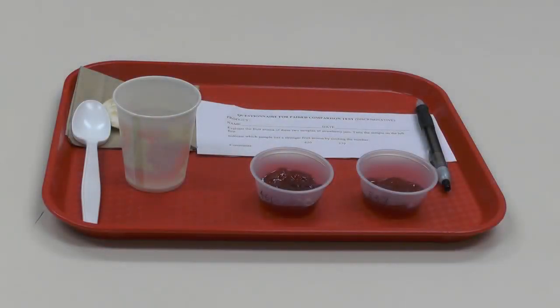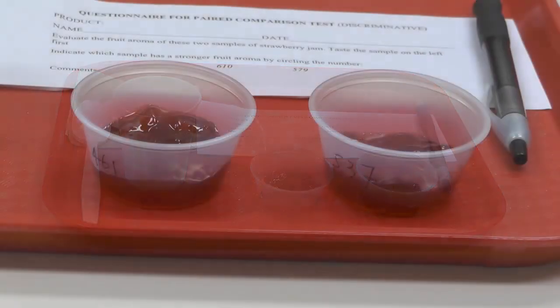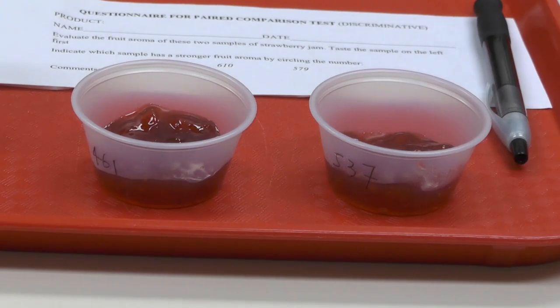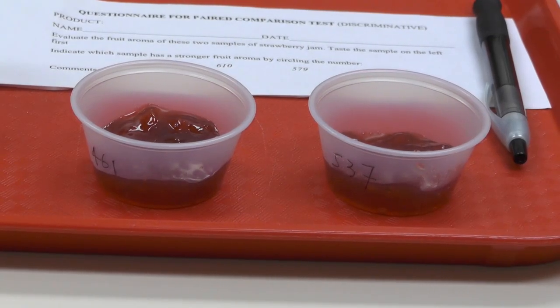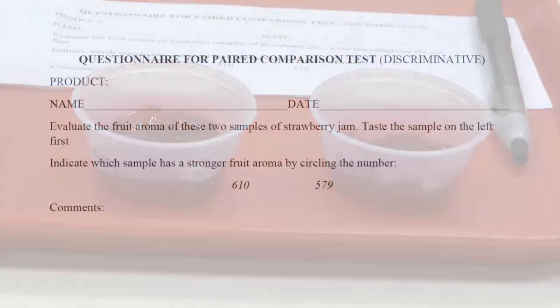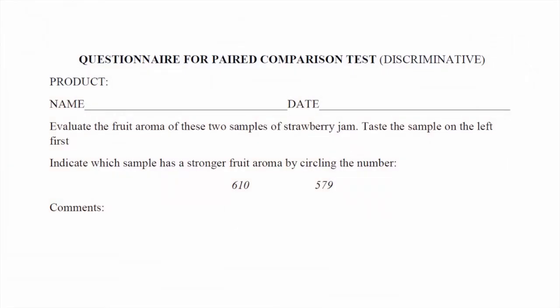In a pair comparison test setup, only two coded samples are used. This test is unique compared to the previous two tests because it allows the sample to be evaluated based on a specific characteristic. This is an example of what a pair comparison test questionnaire looks like. The panelist is asked to taste the samples in a certain order and identify the one that fits more with the characteristic of interest.